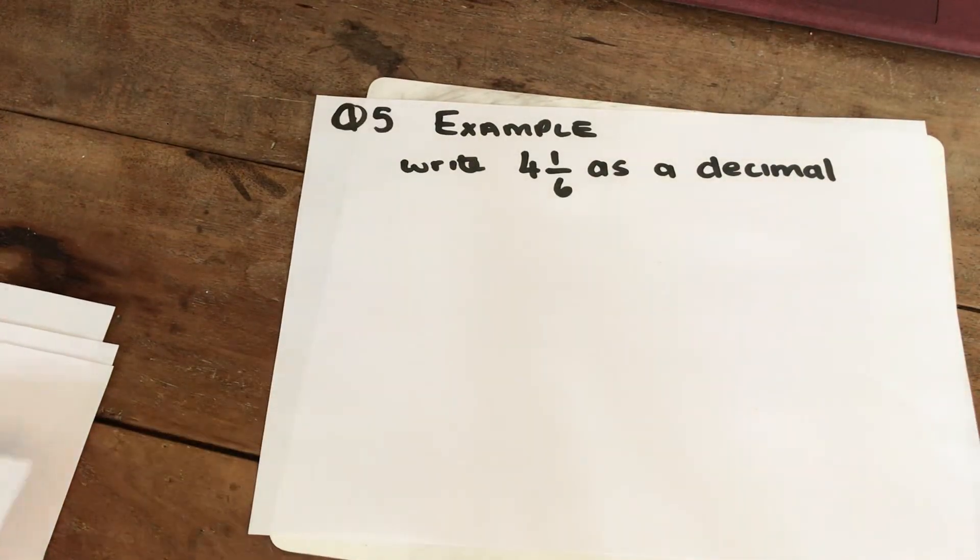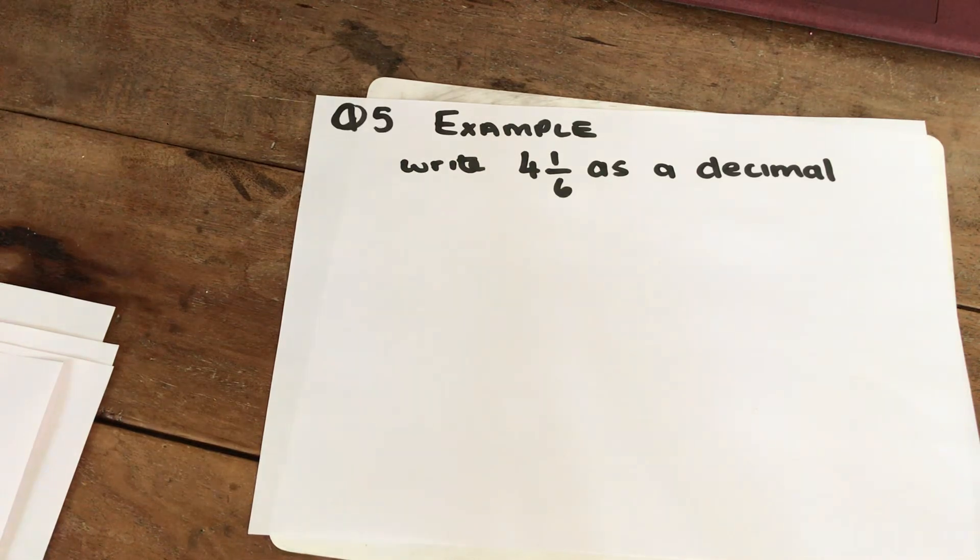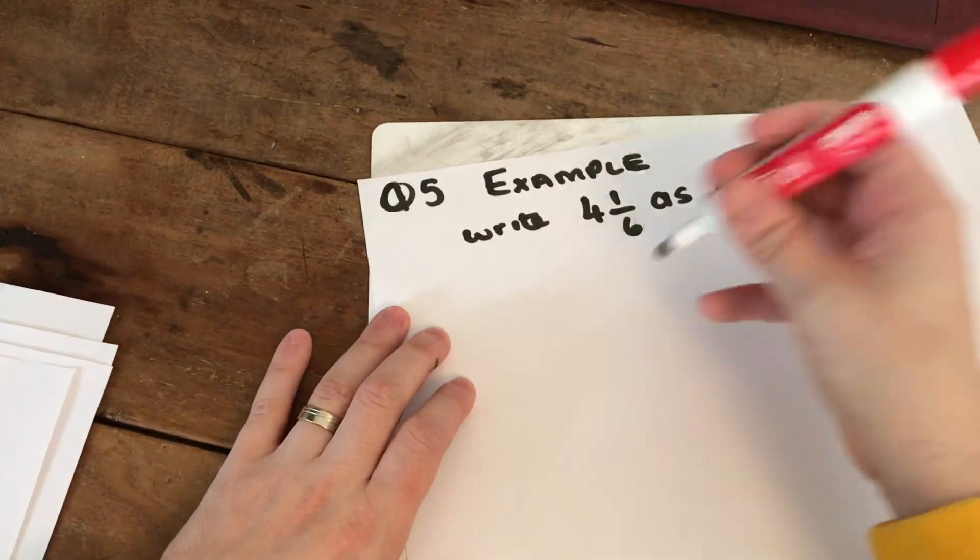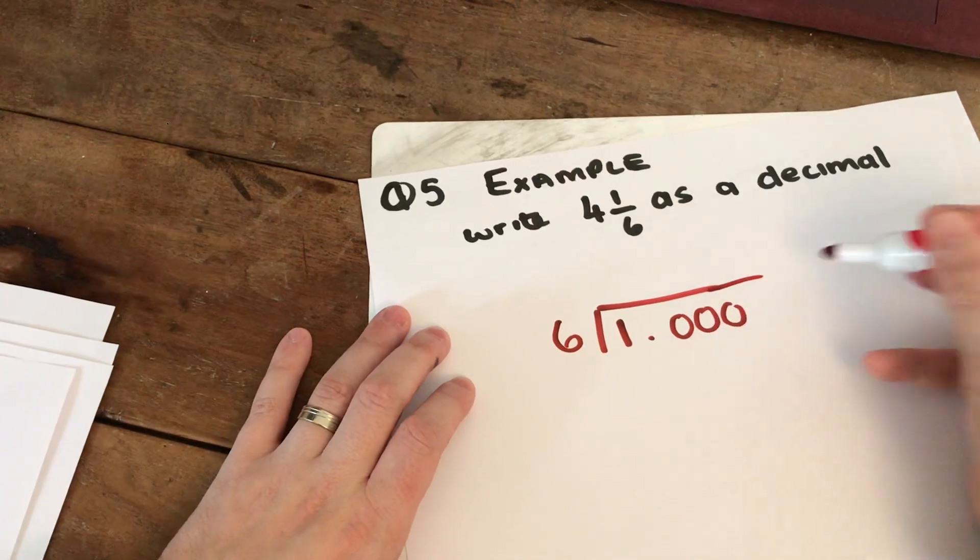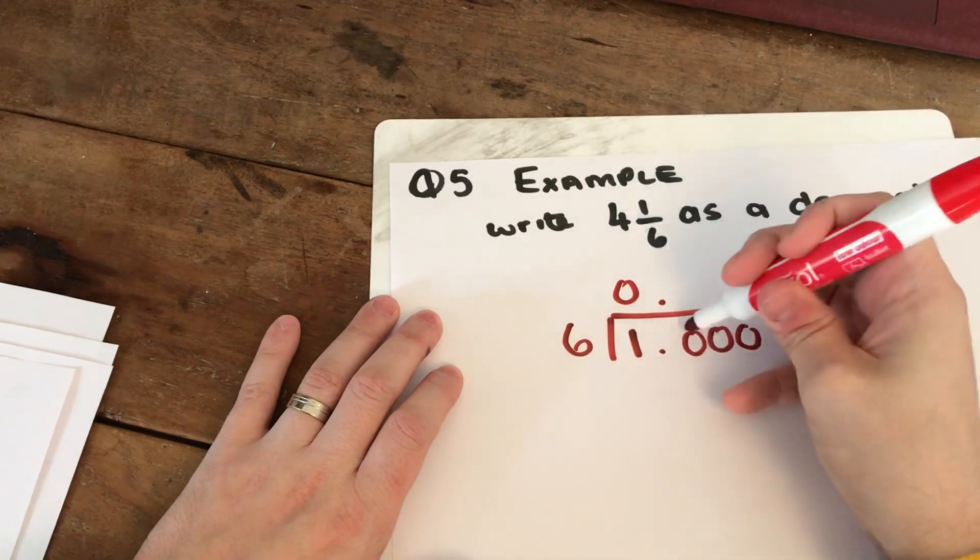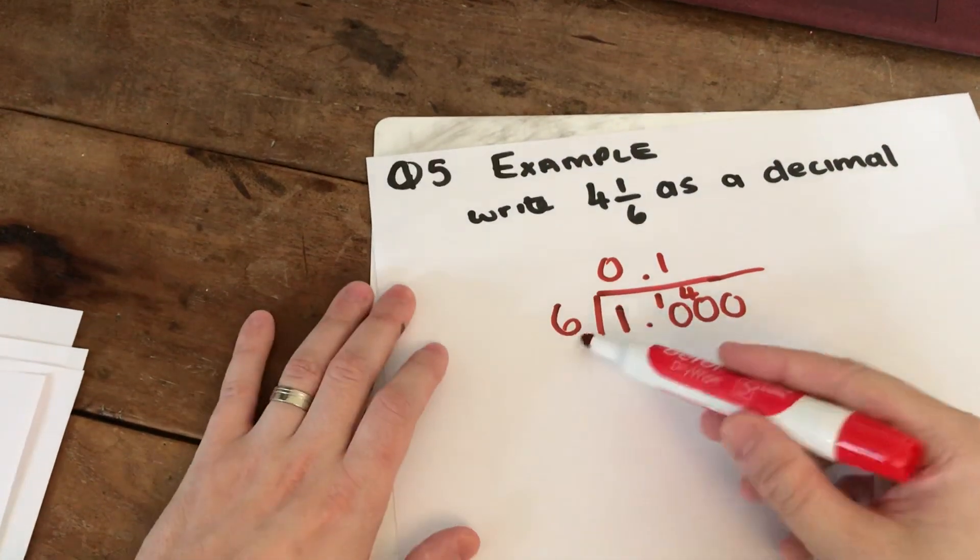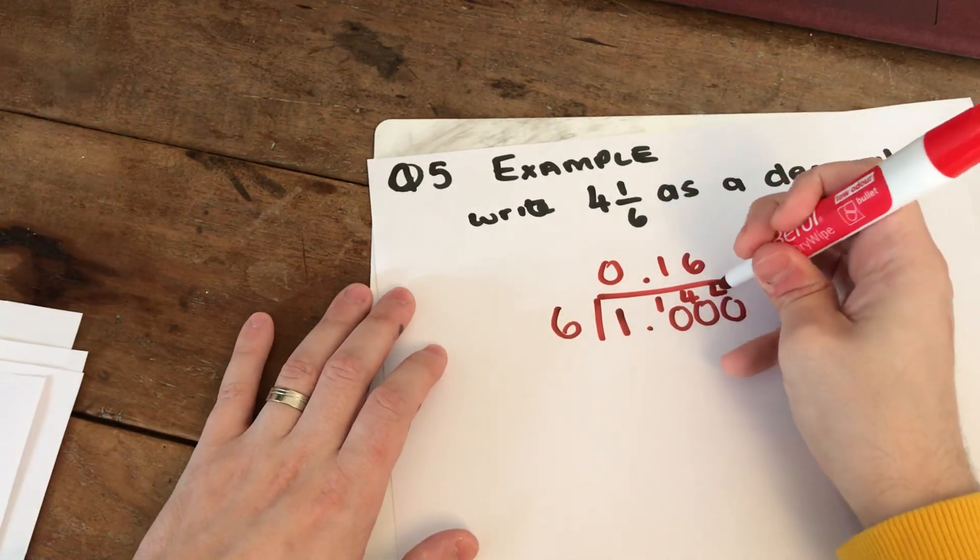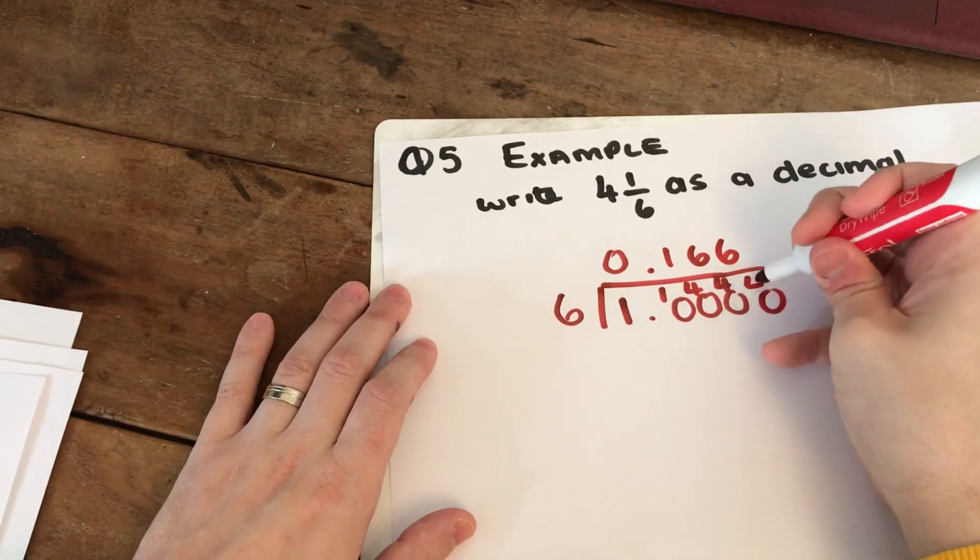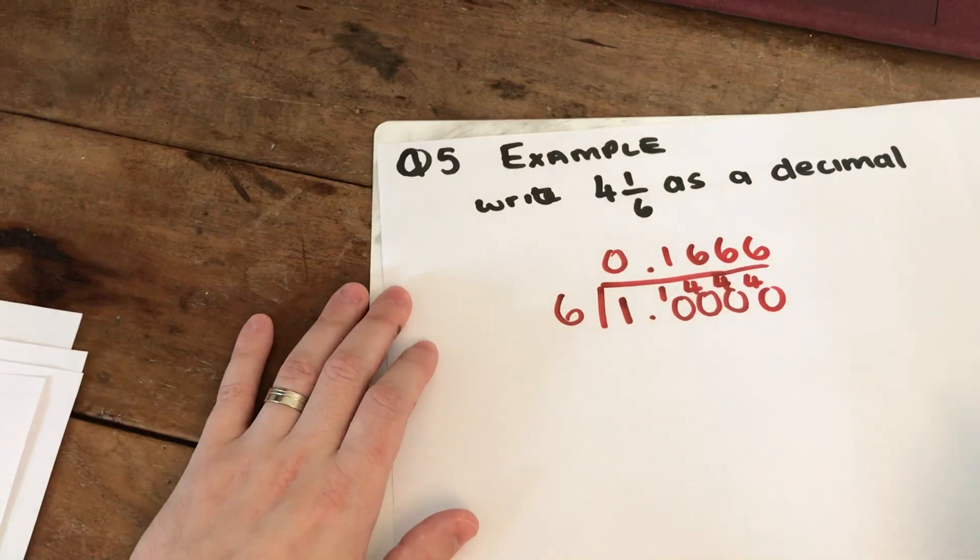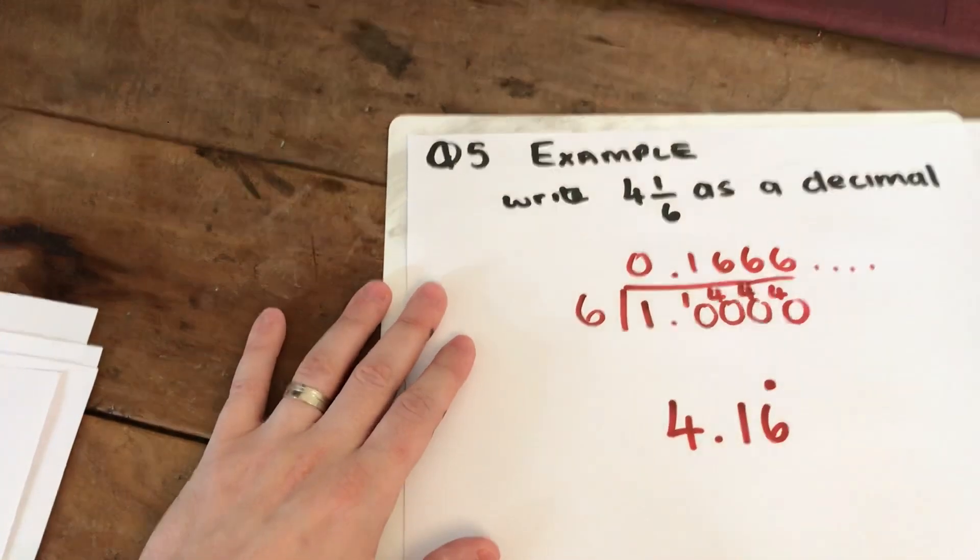When you do your questions, there's one other type you might see. It says write 4 and 1 sixth as a decimal. It will ask you to write a mixed number as a decimal. You take the fraction and turn it into a decimal. How many times does 6 go into 1? Zero times with 1 remaining. How many times does 6 go into 10? Once with 4 remaining. How many times does 6 go into 40? 6 times with 4 remaining because 6 times 6 is 36. You can see the number is going to be recurring. So I can stop writing because I know the 6s will continue. I would write this as 4.16 with my recurring dot over that.